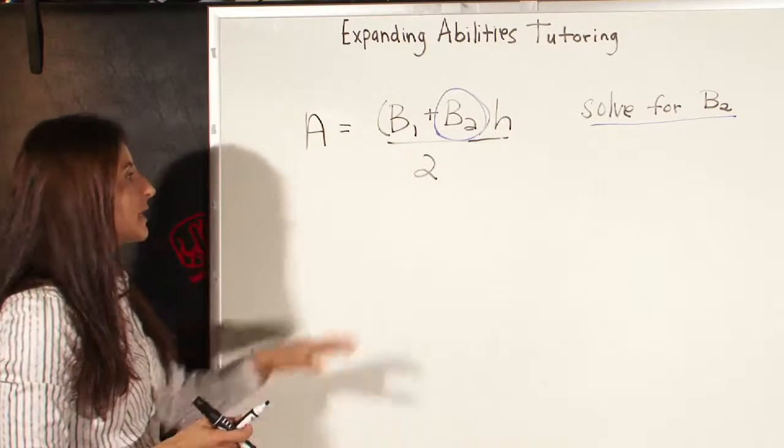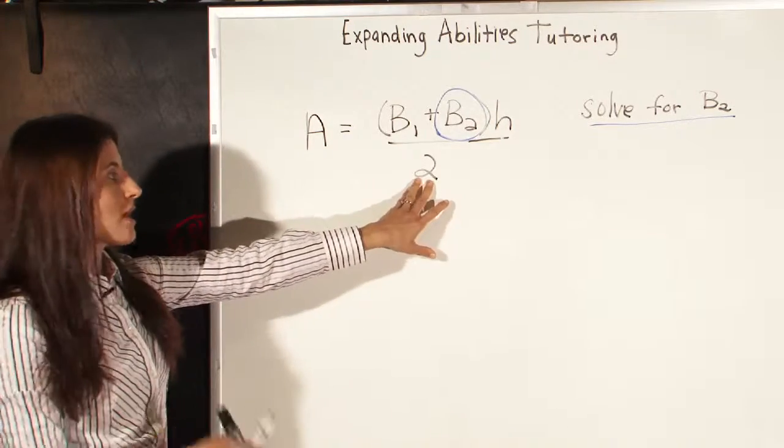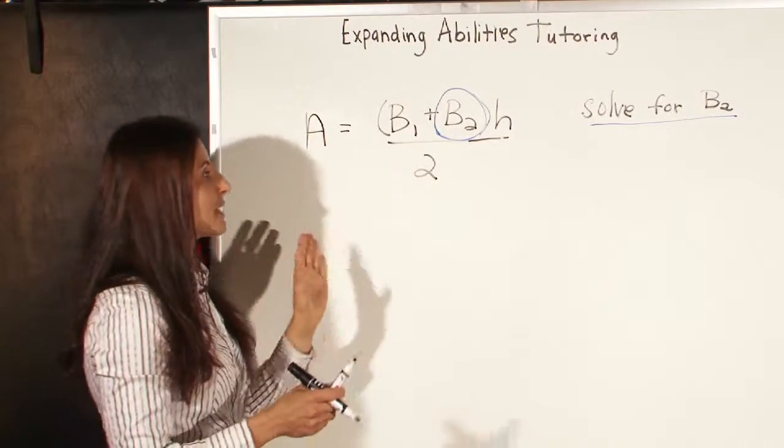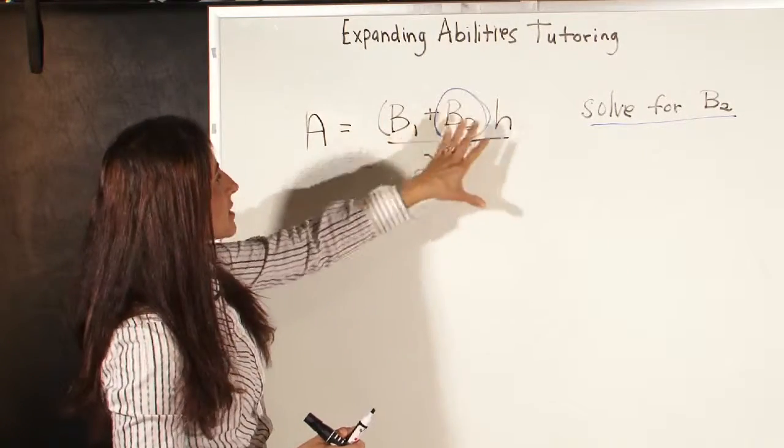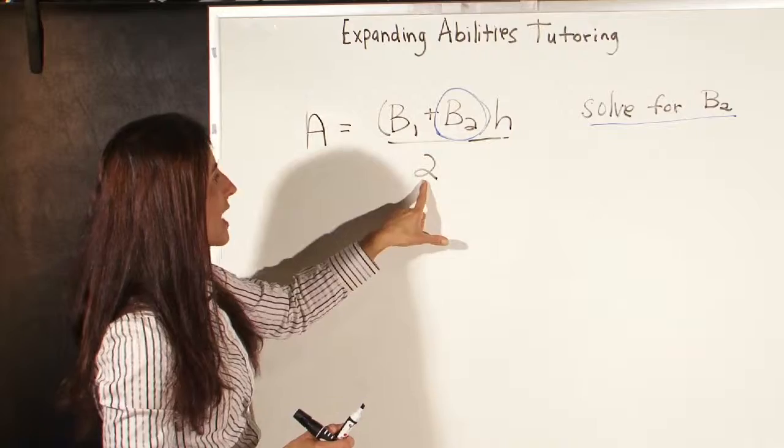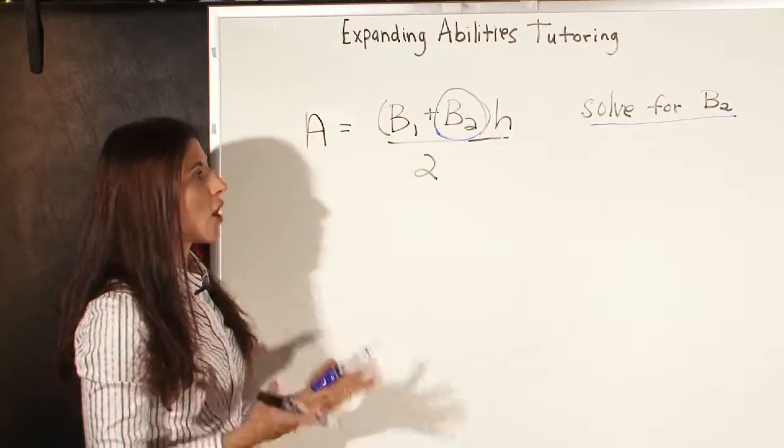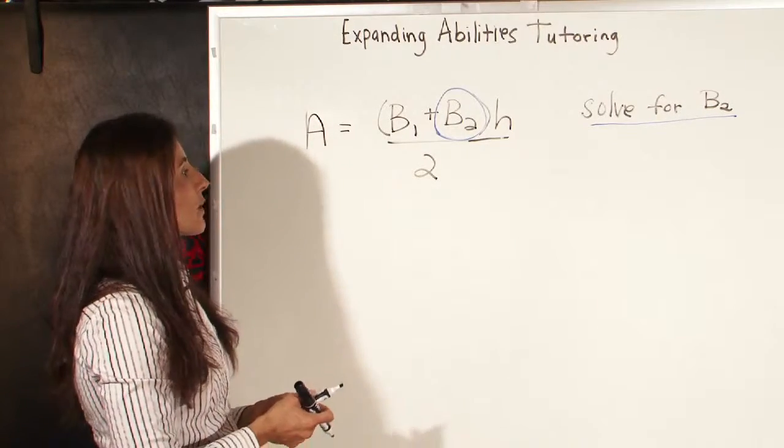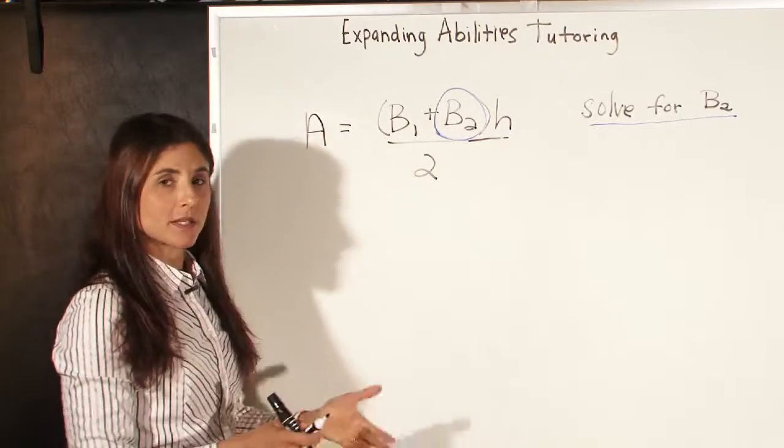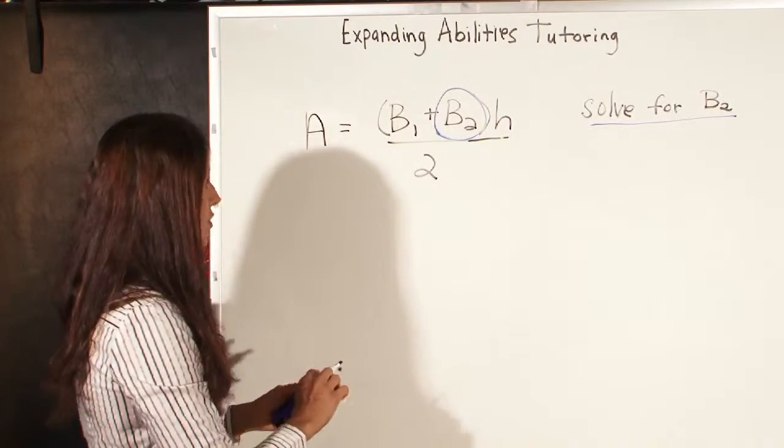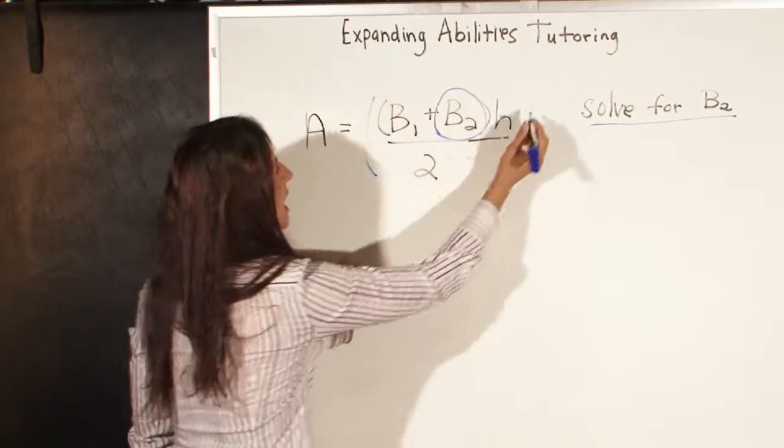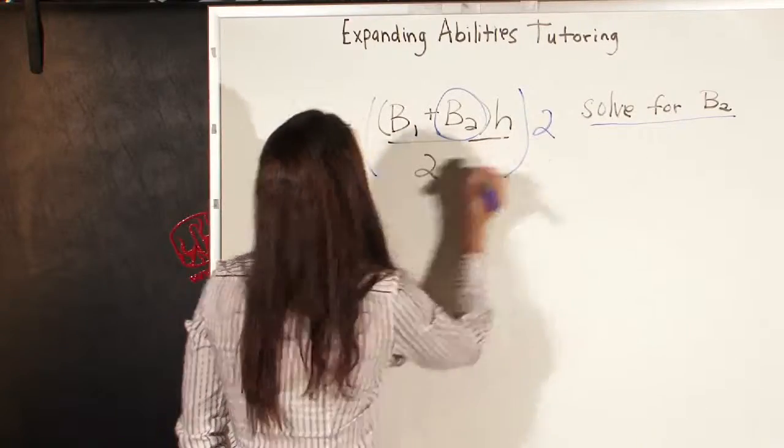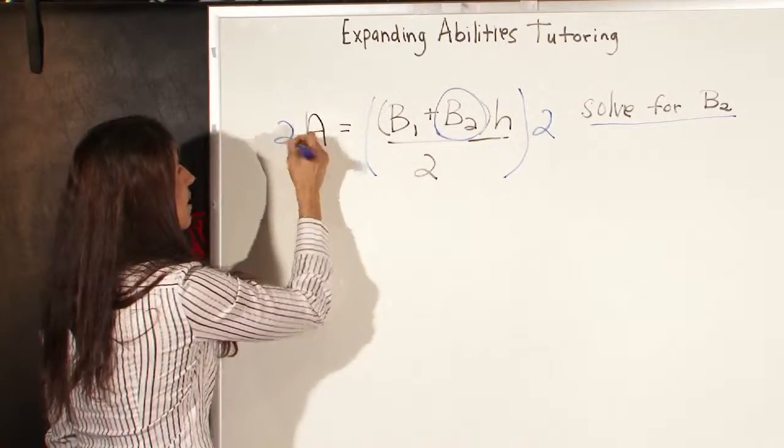The first thing we want to do is get rid of this annoying 2 down on the bottom. We want to make it go away, and that means that this top is being divided by 2. So when we're solving for a variable, we want to do the opposite of division, which is multiplication, and we want to multiply both sides of the equation by 2.